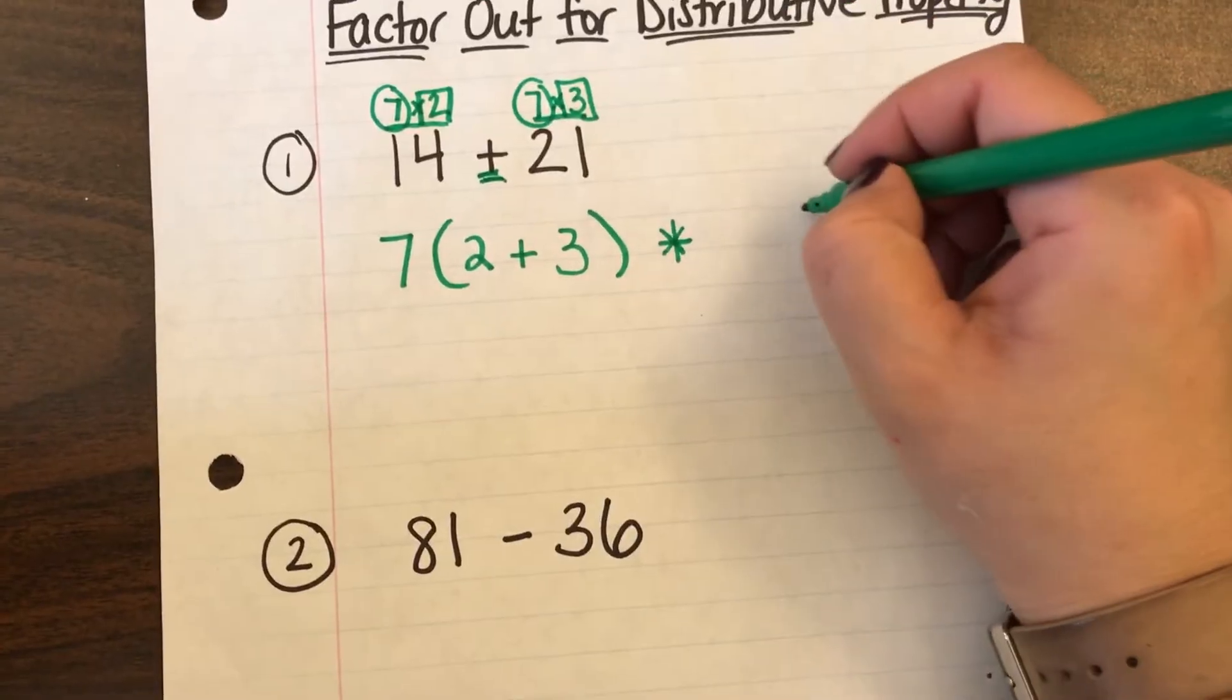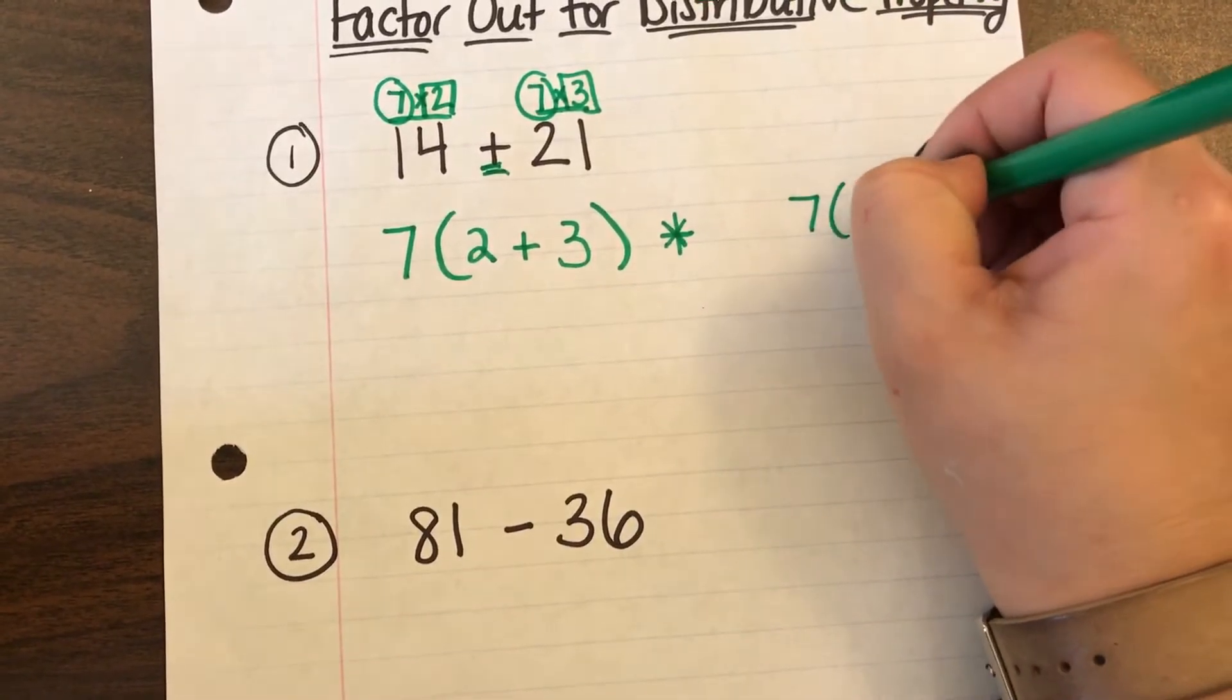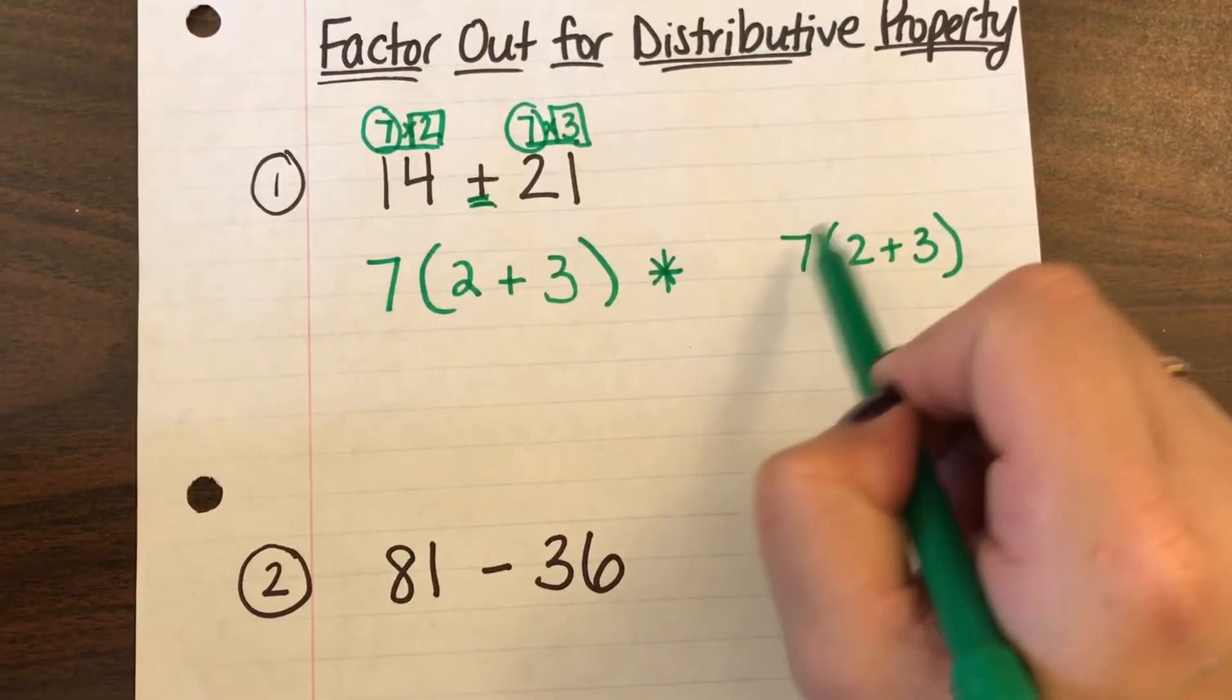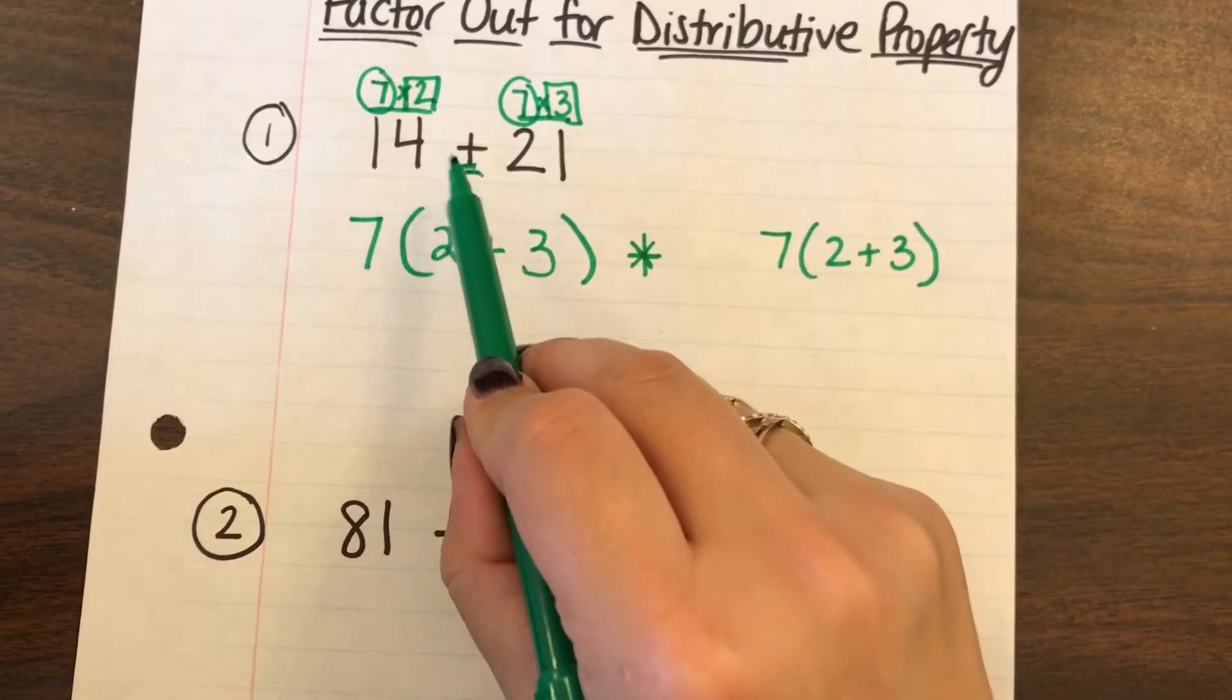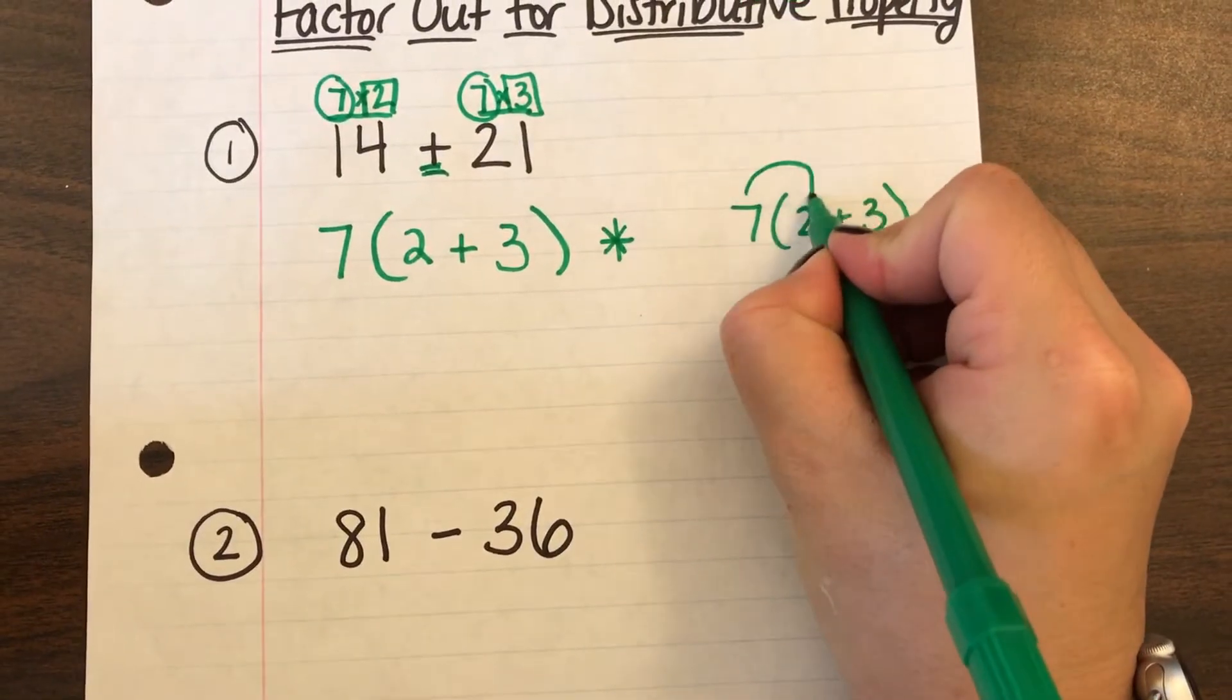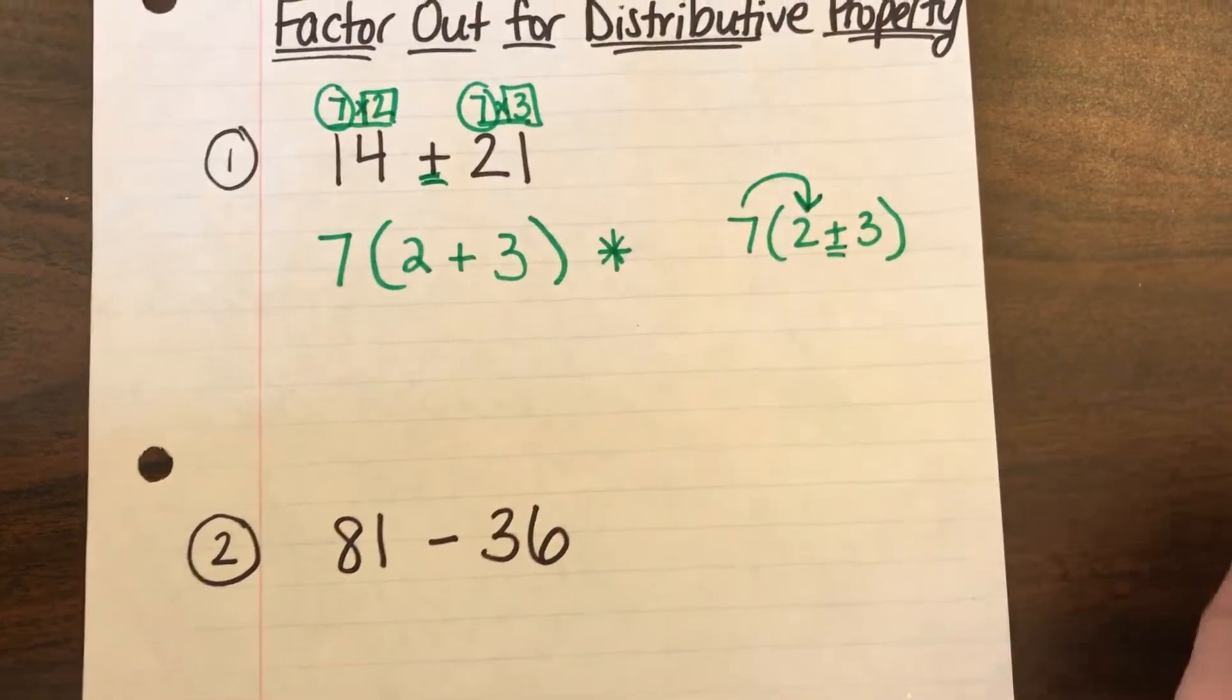And if you wanted to check yourself you could use the distributive property to change this and it should equal out to what your original problem was. So if I wanted to try that, say hi because it's a plus, multiply.